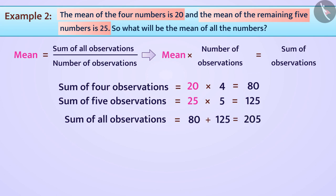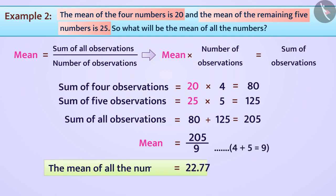Now, the mean will be derived as mean equals sum of all observations divided by number of observations, 205 divided by 9 equals 22.77.